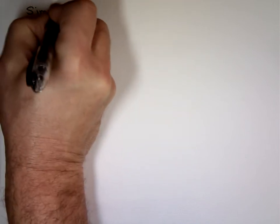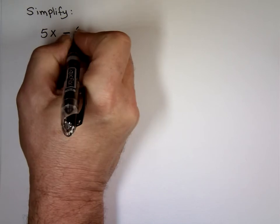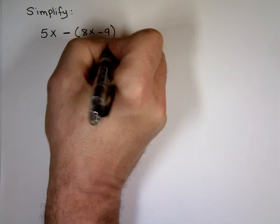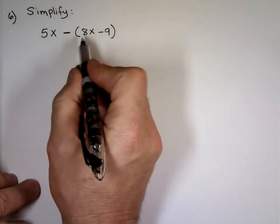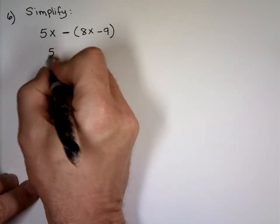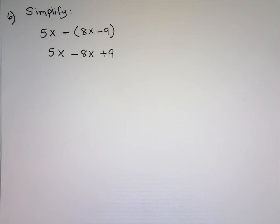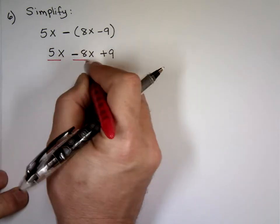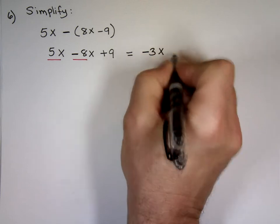Simplify: 5x minus the quantity (8x minus 9). The minus sign says change all the signs inside the parenthesis. So this becomes 5x minus 8x plus 9. Now these two are like terms — combine them. What is 5 minus 8? Negative 3x, plus 9.